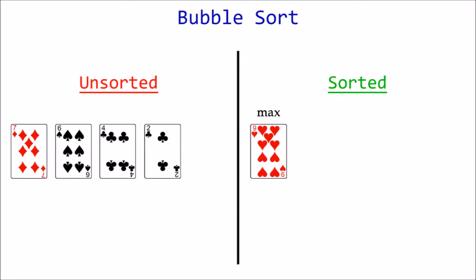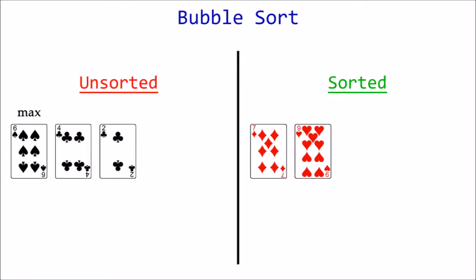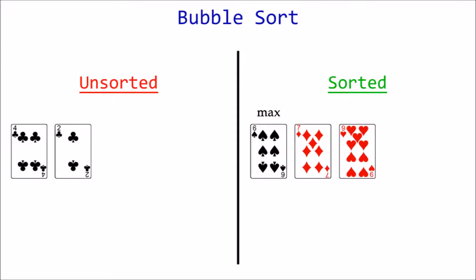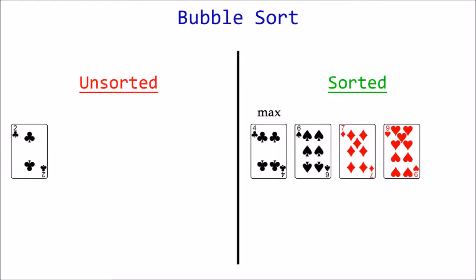This is accomplished by iterating through the list multiple times, swapping elements with their neighbors if they are not in the correct order. Each iteration is called a pass. At the end of each pass, the largest unsorted element will be positioned at the end of the unsorted section, which then becomes part of the sorted section.